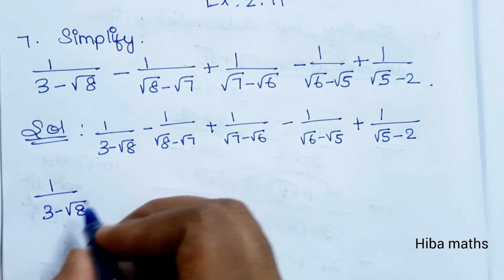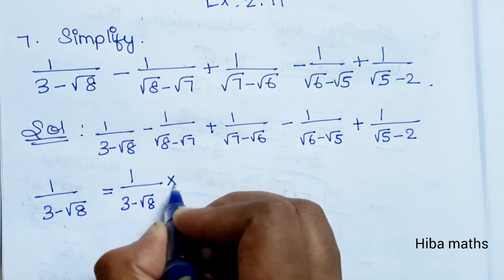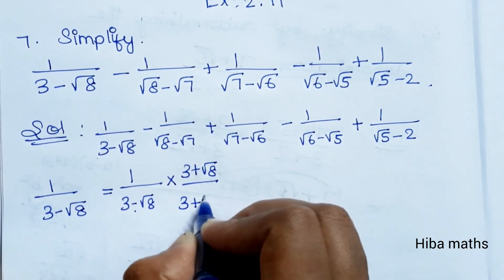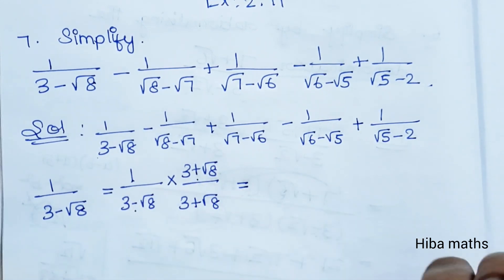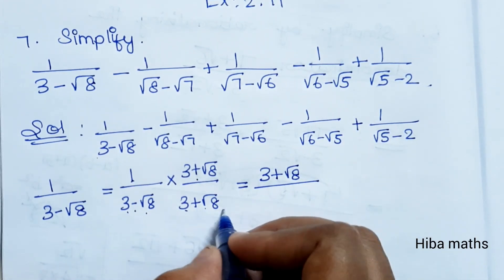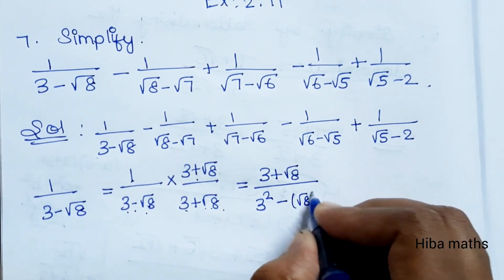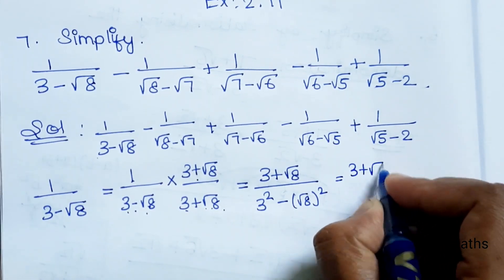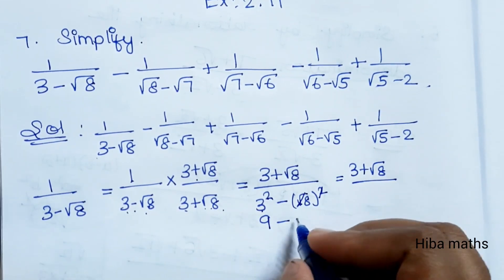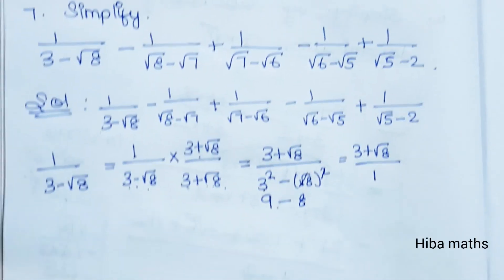For the first term, 1/(3 - √8), multiply numerator and denominator by the conjugate (3 + √8): we get 1 × (3 + √8) divided by (3 - √8)(3 + √8). This is of the form (a - b)(a + b) = a² - b², giving 3² - (√8)² = 9 - 8 = 1. So the first term simplifies to (3 + √8)/1 = 3 + √8.